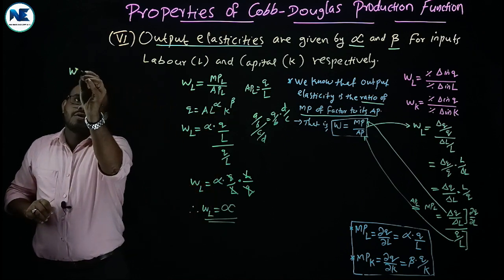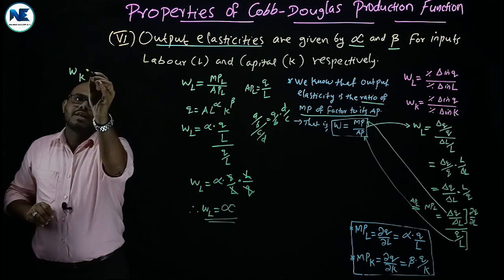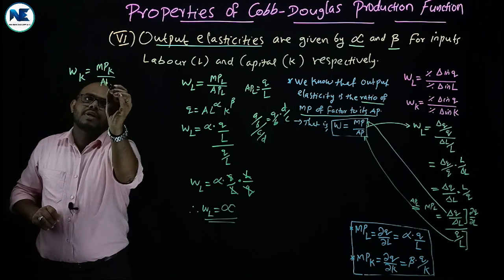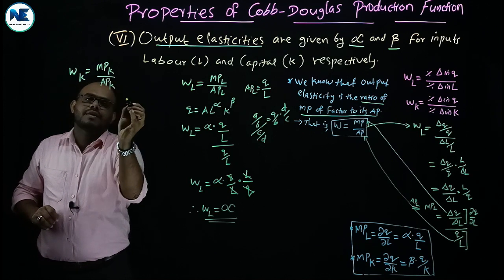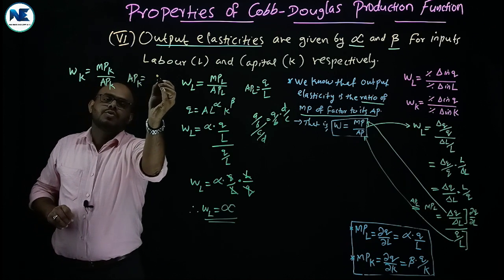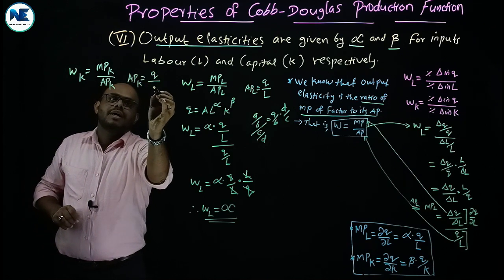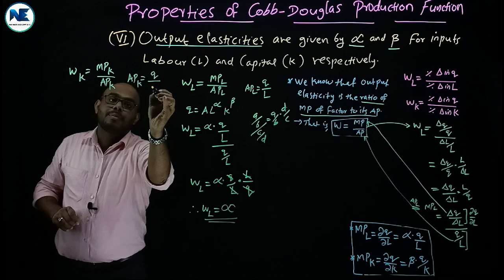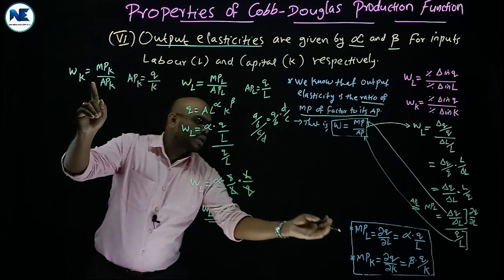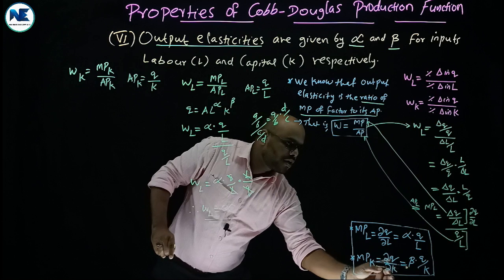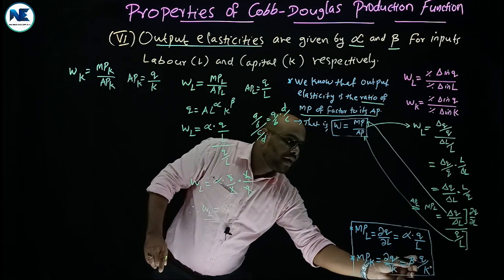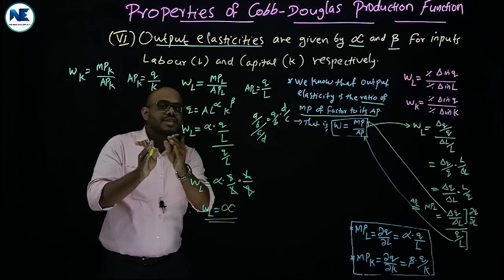Output elasticity of capital equals marginal product of capital divided by average product of capital. Average product of capital is total output divided by capital input, Q / K. Marginal product of capital dQ/dK = beta × Q / K.